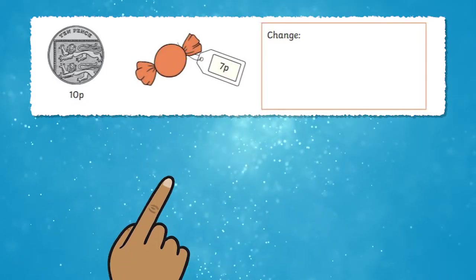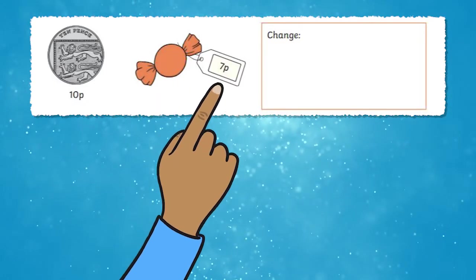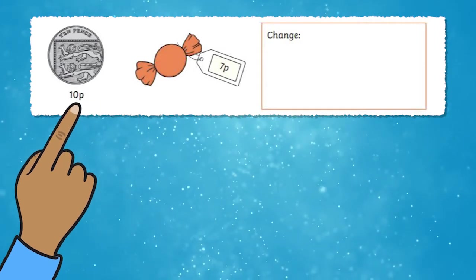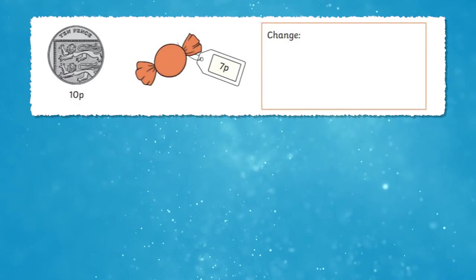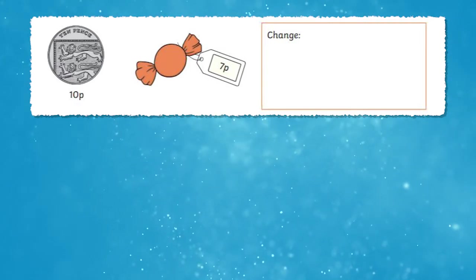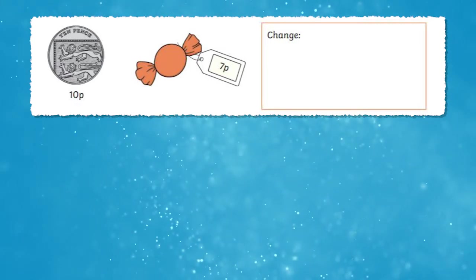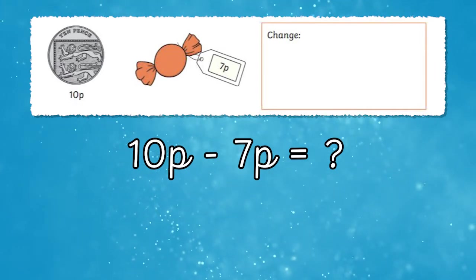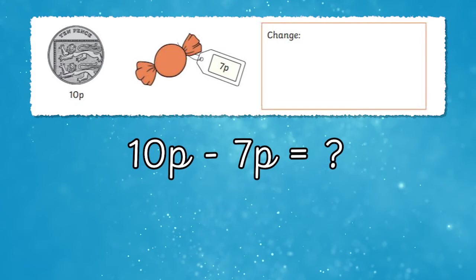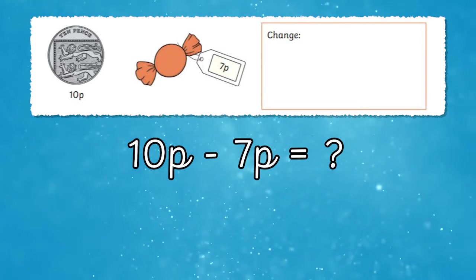In this example we buy a sweet for 7 pence using a 10 pence coin and we need to work out what change we'll receive. Children should understand the number sentence or the process behind finding the change. We start with 10 pence and we're taking away 7 pence or subtracting 7 pence as you can see here.